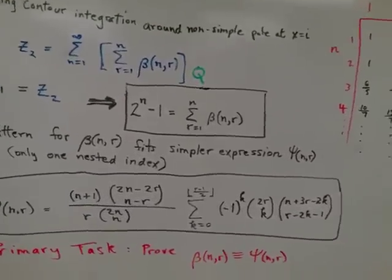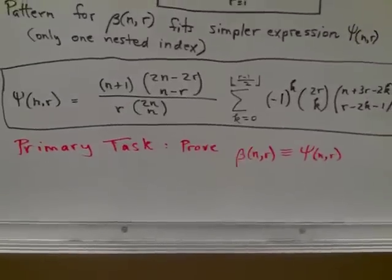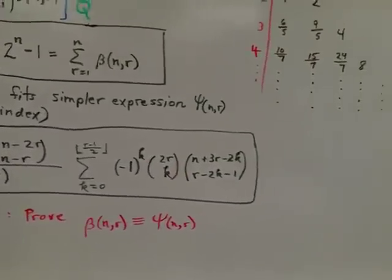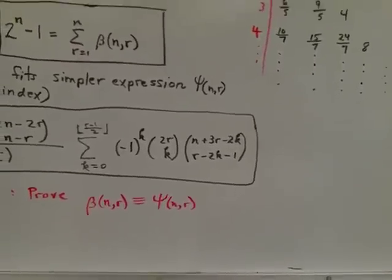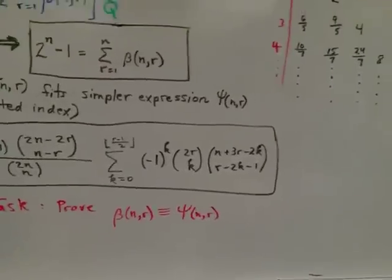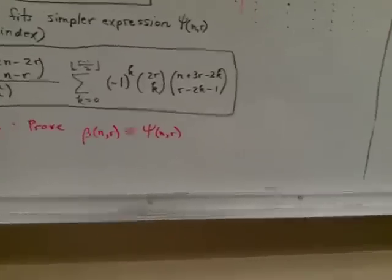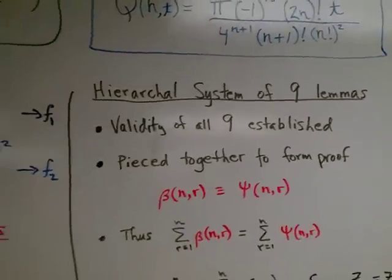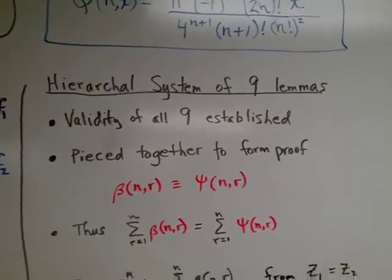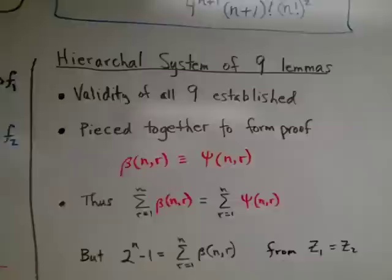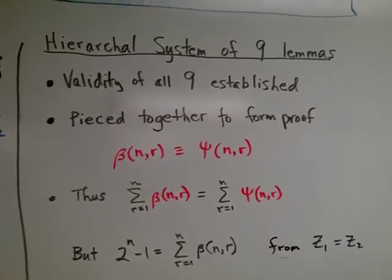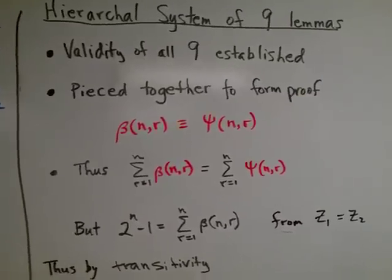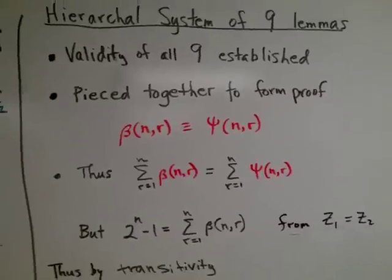So the primary task of this paper then is to prove that the complicated function beta is equivalent to the simplified function psi for all n or just for symbolic n. To do this, I constructed a hierarchical system of nine lemmas, established the validity for all nine, and then pieced them together to form a complete proof that beta was indeed equivalent to psi for all n.